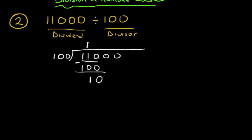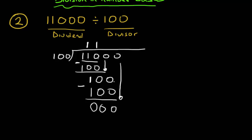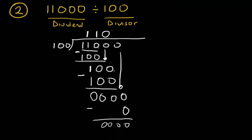I bring down the next digit zero, giving '0100' — but wait, '100' equals '100', so I put one on top. One times '100' gives '100'. I subtract and get zero. I bring down the last zero, giving '000'. Zero is smaller than '100', so I put zero on top. Zero times '100' gives zero; subtracting gives zero. No remainder.